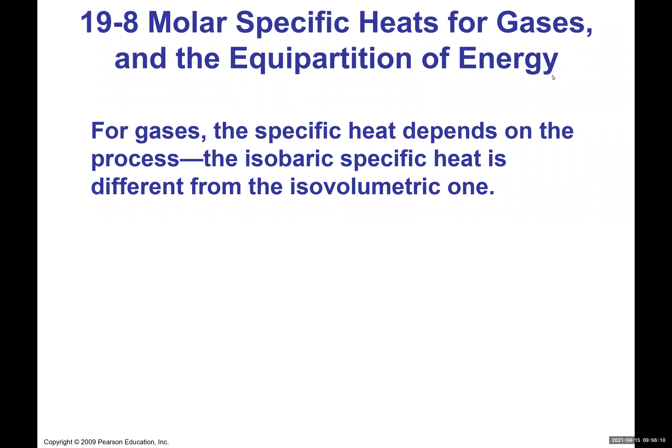We're going to investigate this macroscopic quantity called specific heat. We talked about specific heat for solids and liquids — for example, water and steam — but we kept it simple for gases. Now we're going to talk about how for ideal gases undergoing a process with a change in temperature, the specific heat depends on the specific type of process.